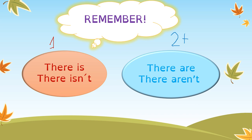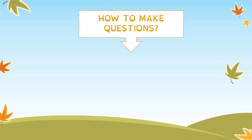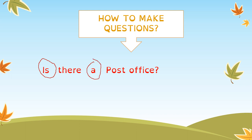Now we are going to learn how to make questions. We are going to start with singular — when we want to ask about only one thing. The question is: 'Is there a post office?' Repeat after me: 'Is there a post office.' You can say post office, museum, or police station — whatever you want. Remember 'is' because it's singular, and 'a' means only one.